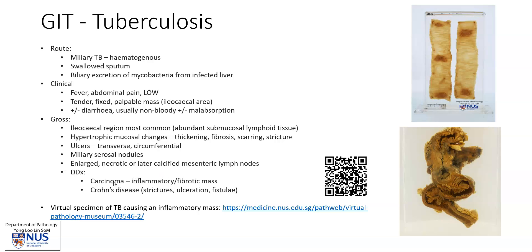The main differential diagnosis is malignancy, particularly if there is an inflammatory mass, and this can be very difficult to distinguish from TB radiologically alone. Hence, a biopsy and demonstration of acid-fast bacilli is required. Another differential diagnosis is Crohn's disease, which can also give rise to ulceration and strictures, and is more likely to cause fistulae.